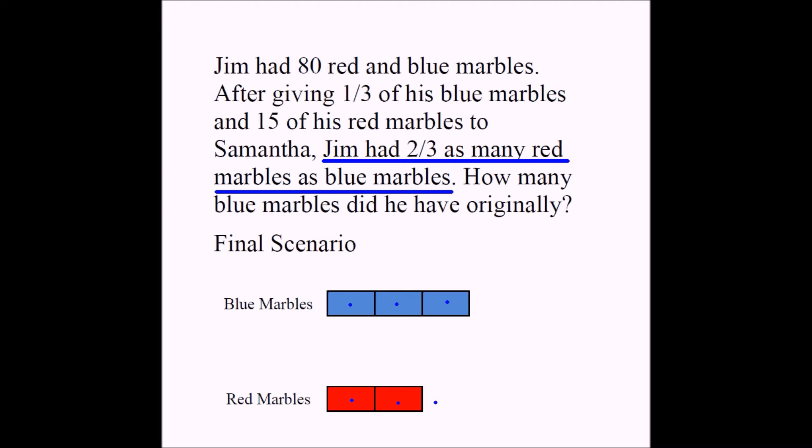3 portions, 3 little boxes to represent the blue marbles and 2 boxes to represent the red marbles. That's what we mean by Jim had 2/3 as many red marbles as blue marbles.